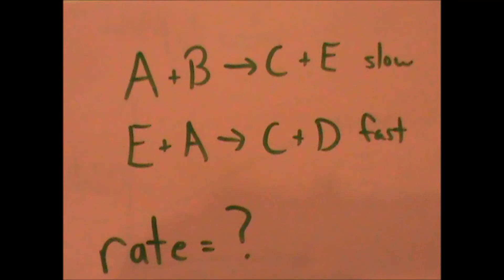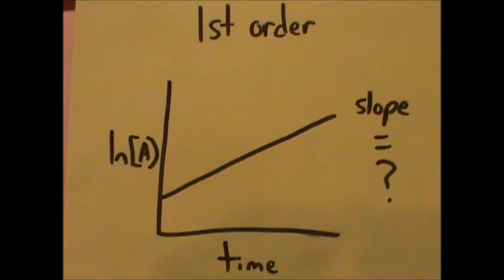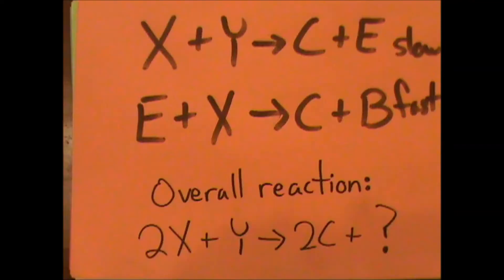Rate equals k times a times b, the rate constant k, b.